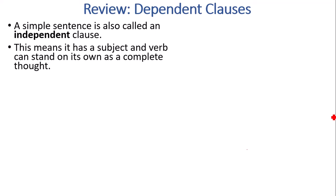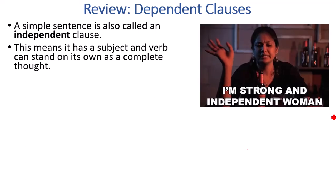Okay so let's review dependent clauses. A simple sentence is also called an independent clause because it can stand on its own as a complete thought. This means it has both a subject and a verb. And like this woman who I also had in my previous presentation. Strong and independent. She doesn't need anybody for help. She can stand on her own.